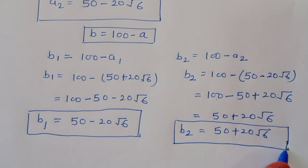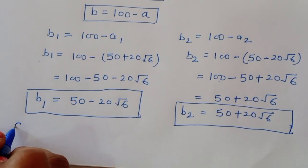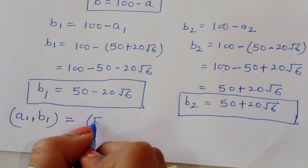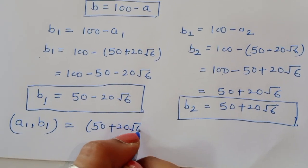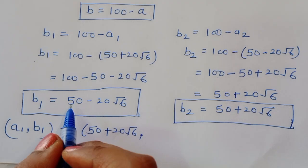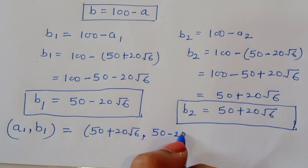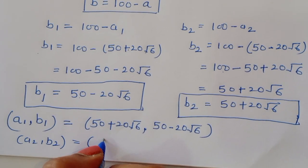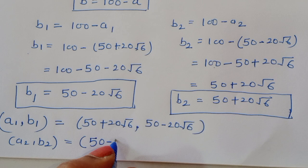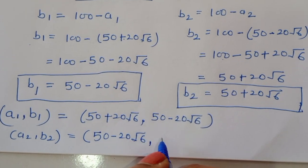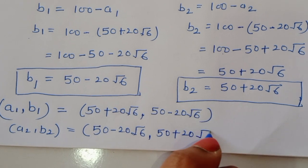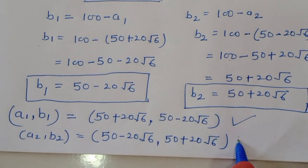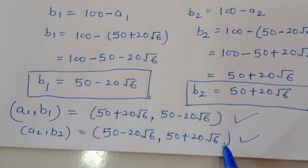So we got two pairs of values for a and b. When a1 = 50 plus 20 root 6, then b1 = 50 minus 20 root 6. And when a2 = 50 minus 20 root 6, then b2 = 50 plus 20 root 6. Now let's verify whether these are correct.